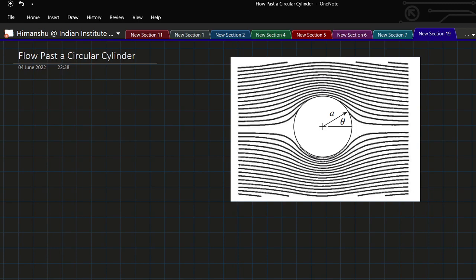This type of flow comes from potential flow theory. Here we are given a circular cylinder of radius a which is not rotating, and we are given a free stream of velocity u infinity. This can be modeled as a superposition of two elementary flows.